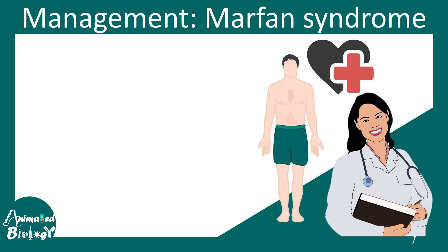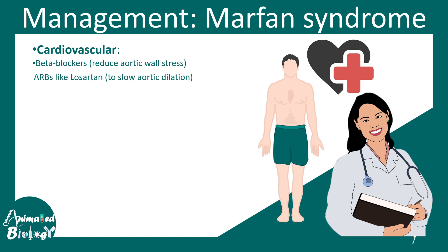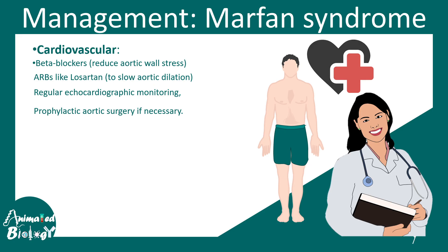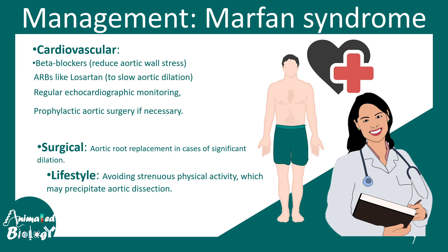For clinical management, cardiovascular management can be done using beta blockers to reduce aortic wall stress. ARBs like losartan can be used to slow aortic dilation. There should be regular monitoring of the heart using echocardiography, and prophylactic aortic surgery may be necessary depending on severity. Lifestyle modifications are also required — avoiding strenuous exercise is important. Severity is not the same for all cases, as different mutations carry different severity levels.